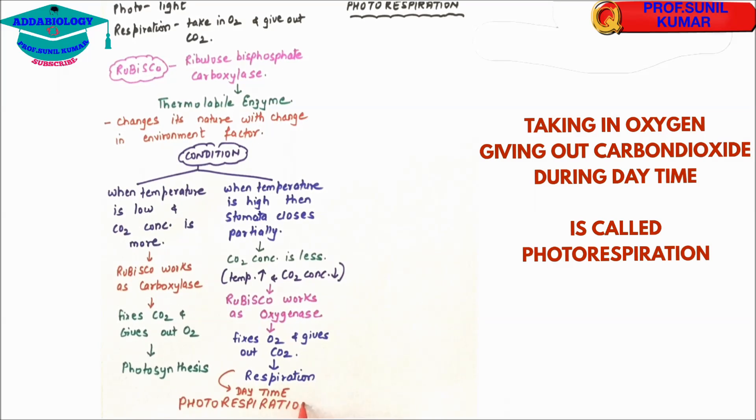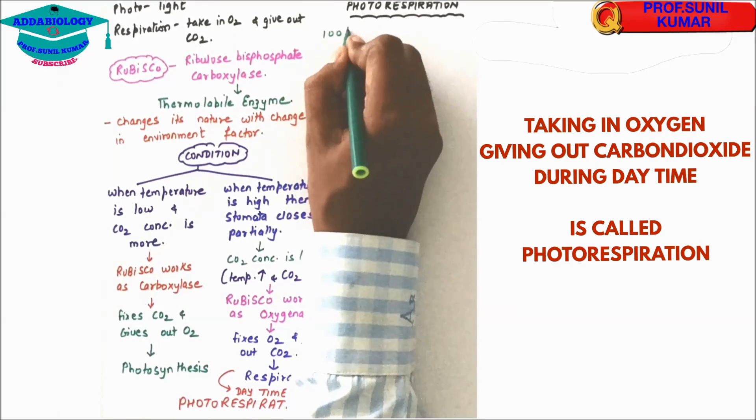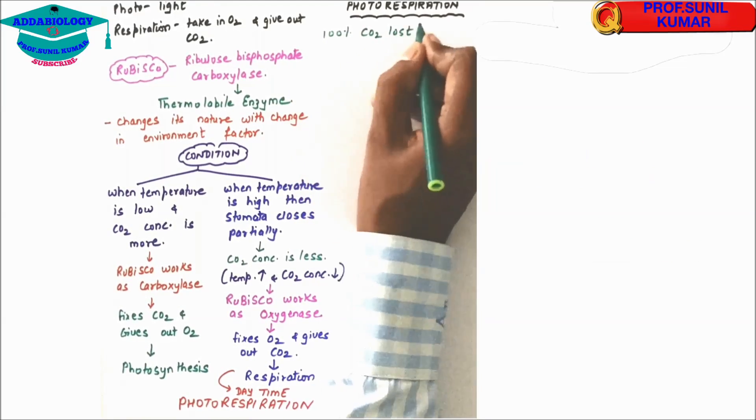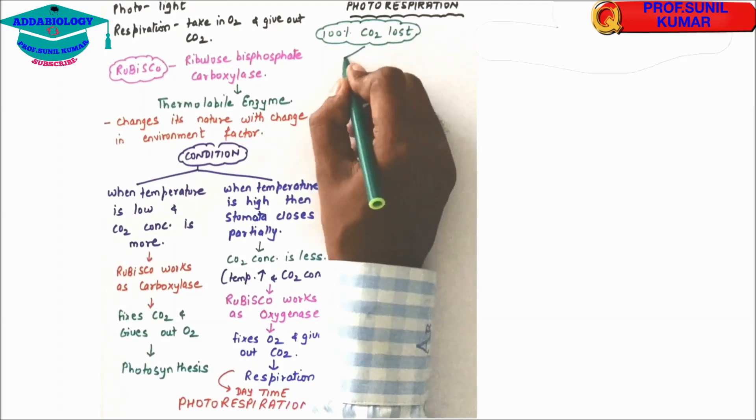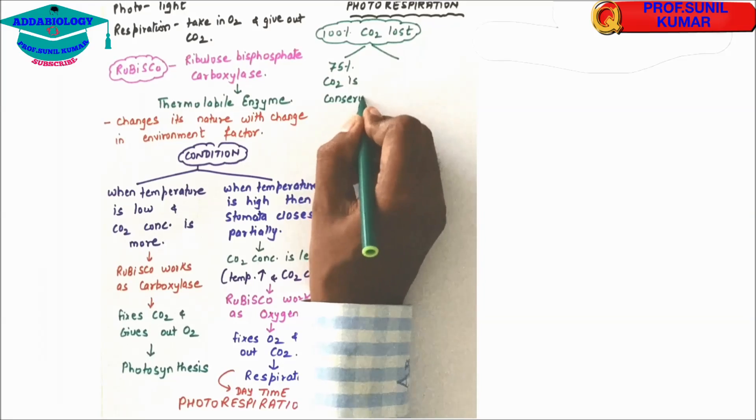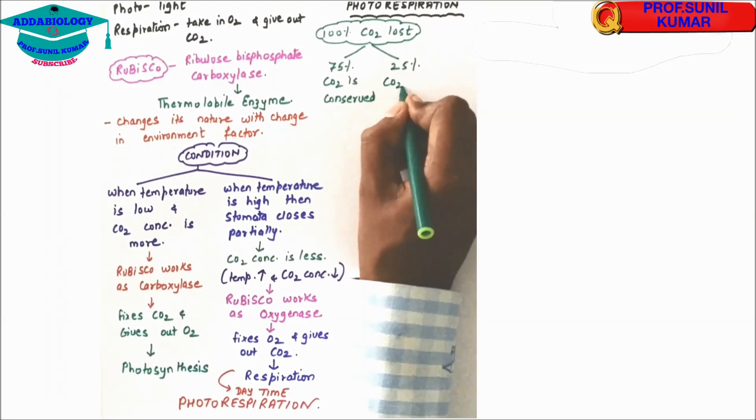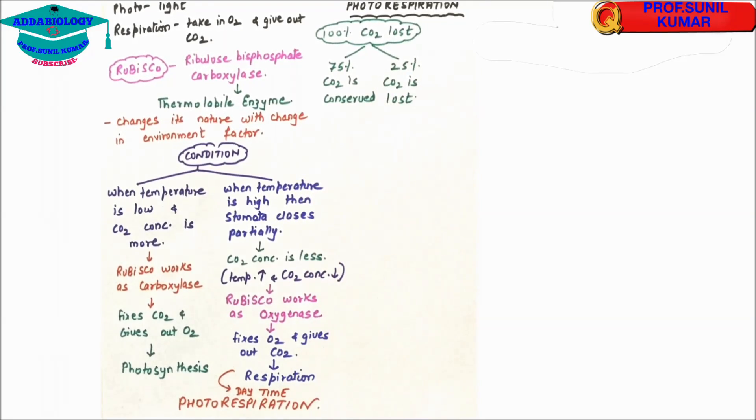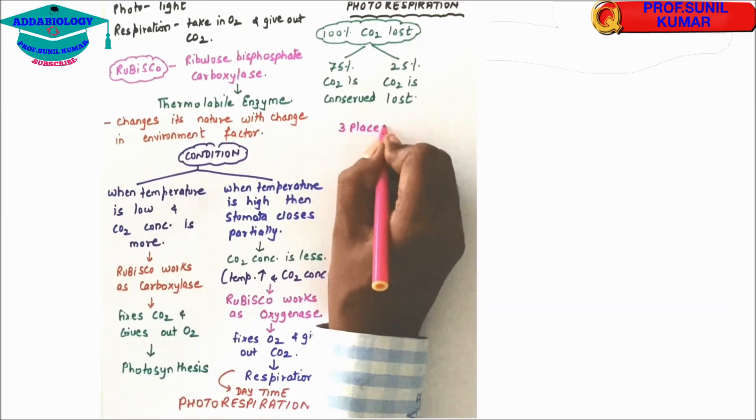So I hope you understood exactly what photorespiration is all about. Now we need to understand, out of 100% carbon dioxide lost during photorespiration, 75% carbon dioxide will be conserved. It means it will be saved, but only 25% carbon dioxide is lost.